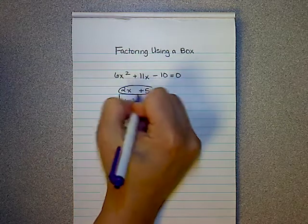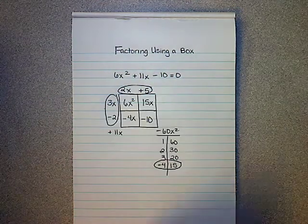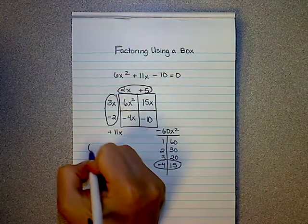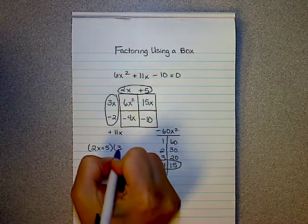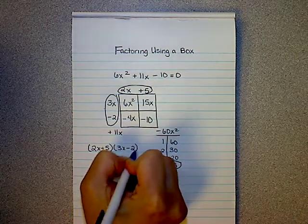So you have now factored your trinomial. 2x plus 5 and 3x minus 2, and it doesn't matter which order you put them in as long as you make sure you have both factors.